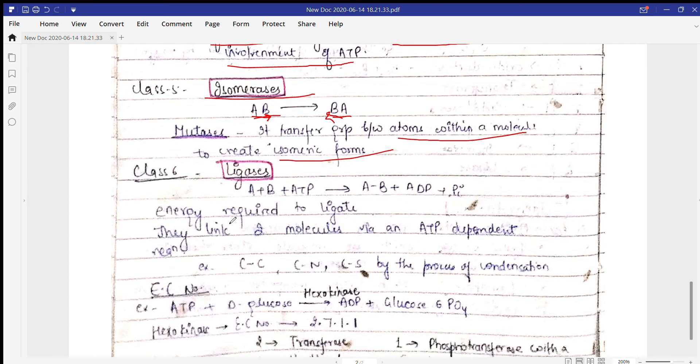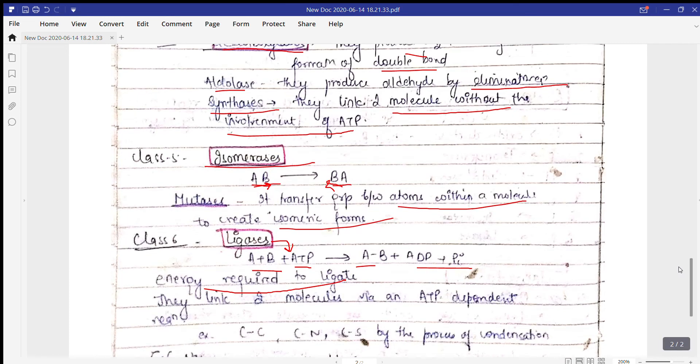Next is ligases. In ligases, ATP is used to form bonds between two molecules. A plus B is added with ATP to form this bond, and ATP provides energy required to ligate. In DNA replication, when nicks are formed, we use ligases which require ATP.